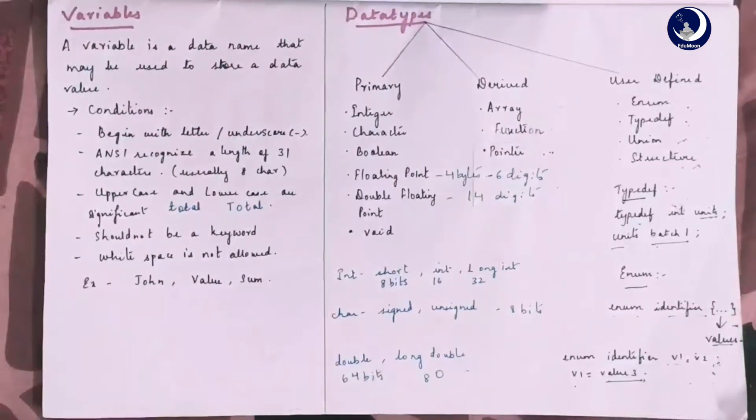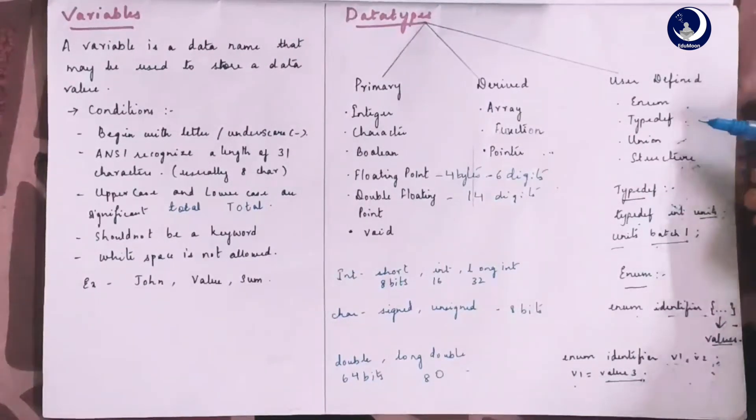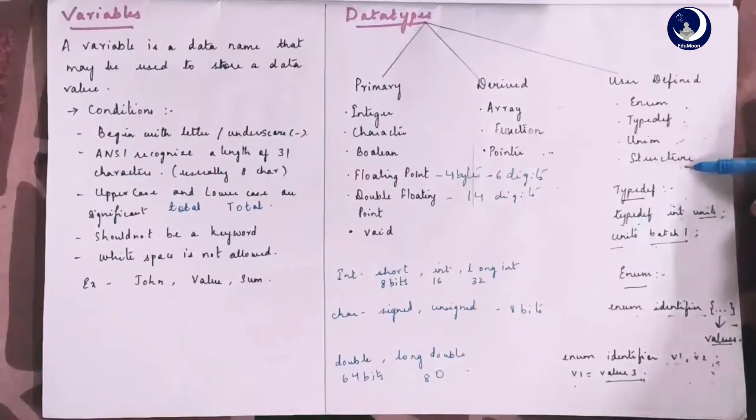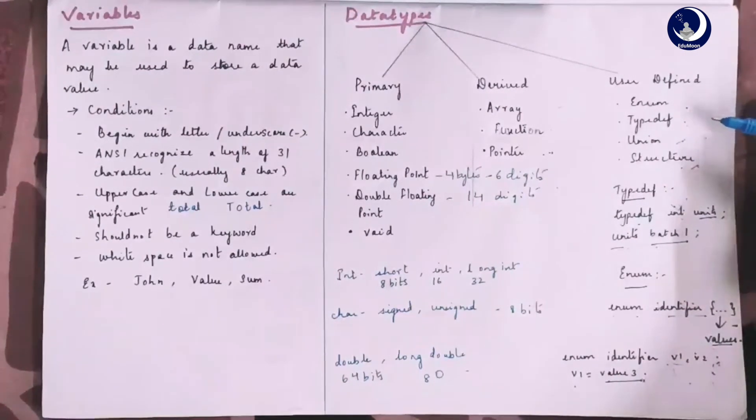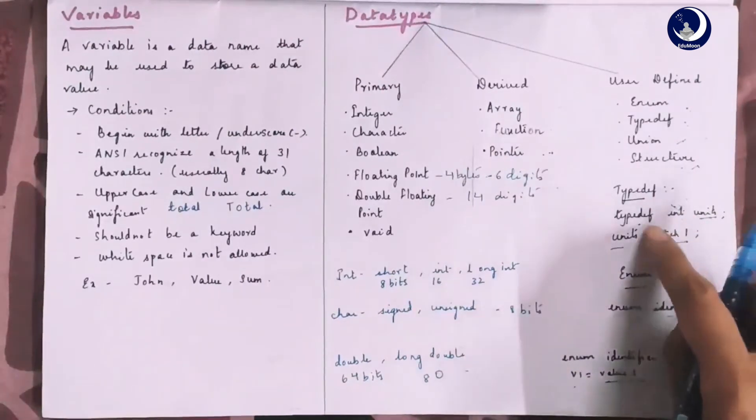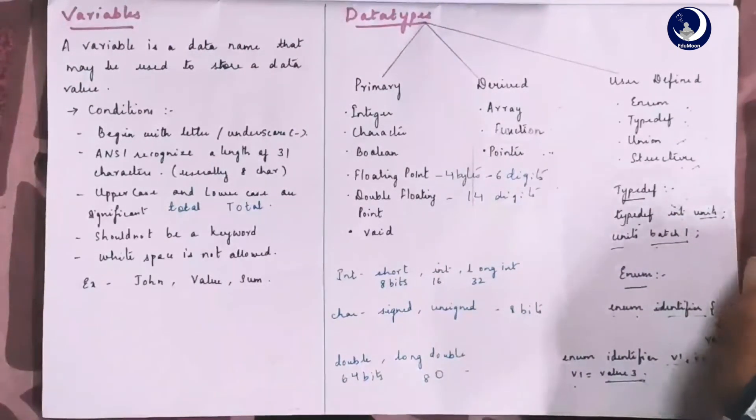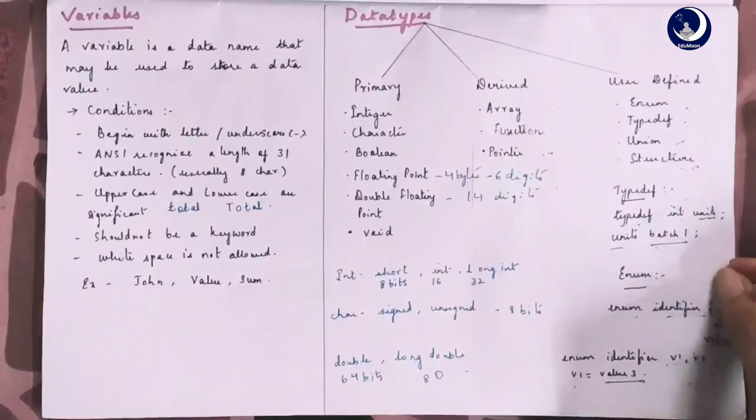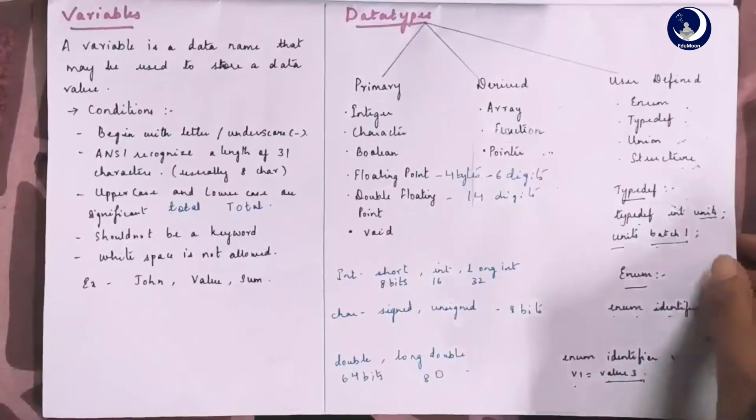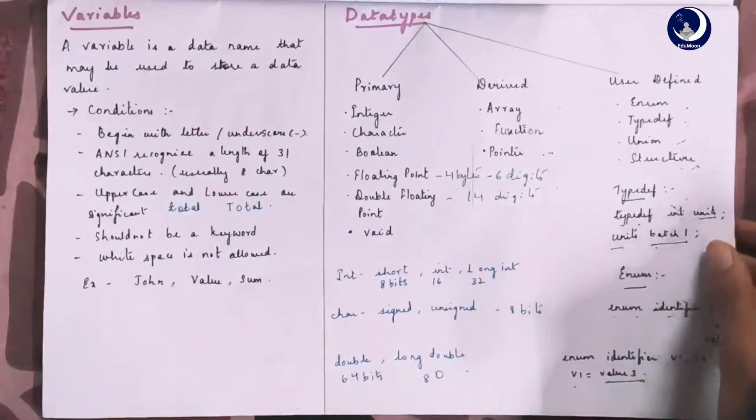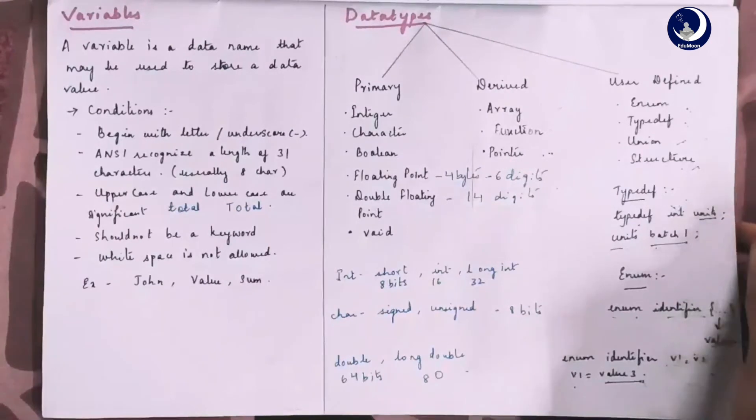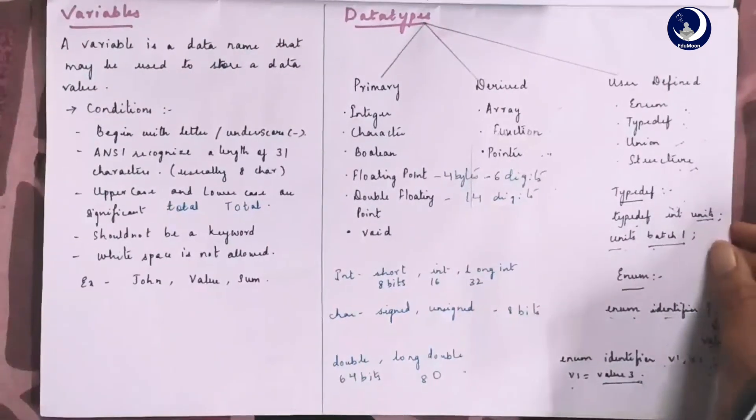The third type is the user defined data types. In the user defined data types, we have enum, typedef, union and structure. Coming to typedef, type refers to an existing data type and identifier refers to the new name given to the data type. The main advantage of typedef is that we can create meaningful data type names for increasing the readability of the program.